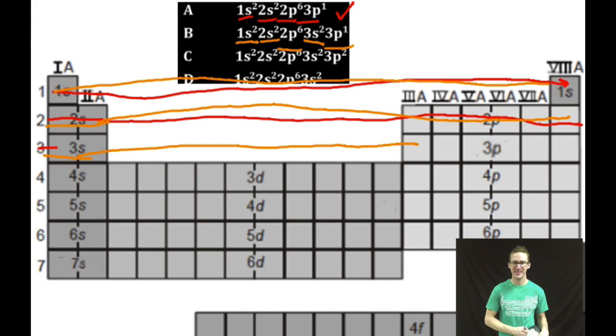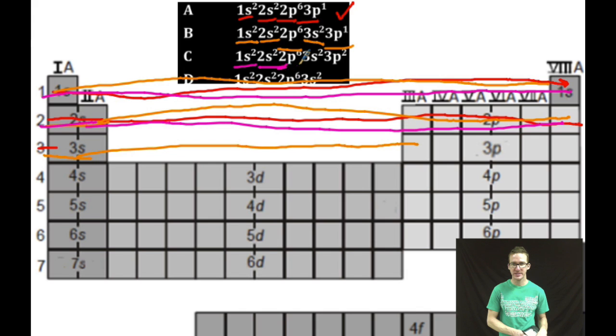One more, why not? It's so much fun. Here we go. 1s2, boom. 2s2, next, 2p6, then 3s2, and finally, 3p2. Again, follows the Aufbau principle lowest energy levels first, ground state.